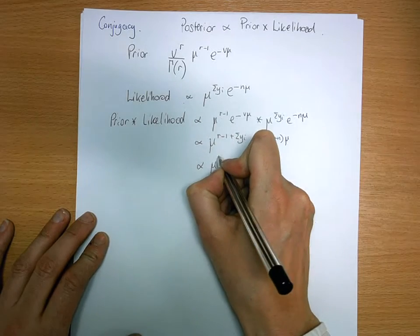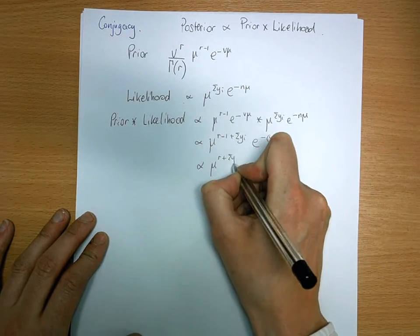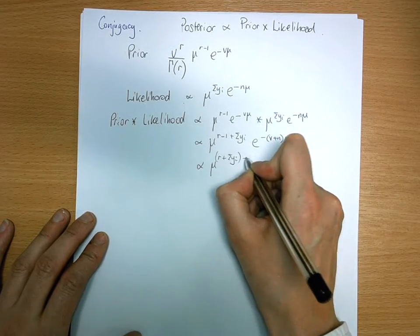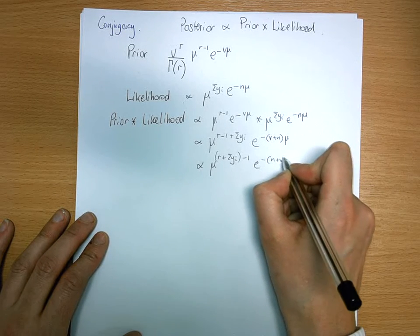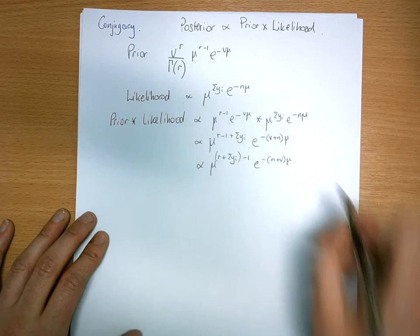Teeniest, tiniest bit of rewriting just to tidy things up: mu to the r plus sum of yi minus 1, e to the minus n plus v mu.